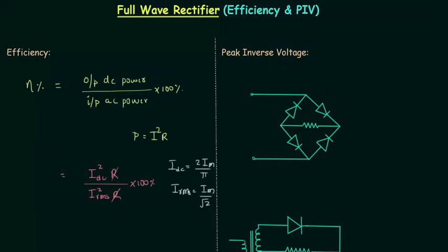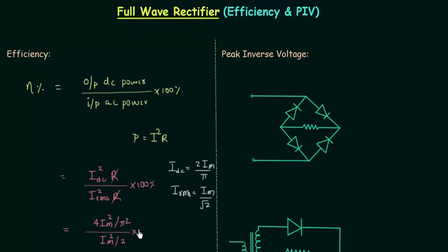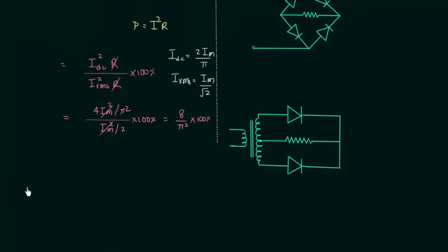So we have 4 IM squared divided by pi squared, divided by IM squared divided by 2, multiplied by 100. The IM squared terms cancel out and we have 8 divided by pi squared, multiplied by 100. When you solve this, efficiency equals 81.13 percent.